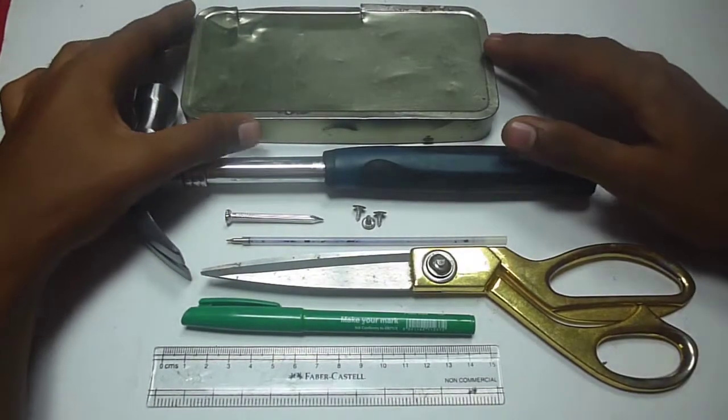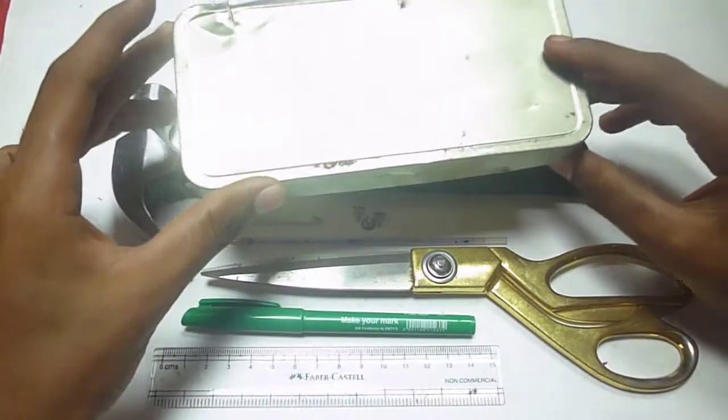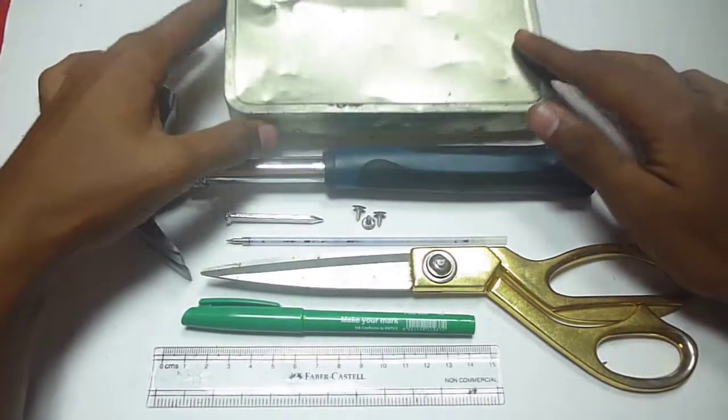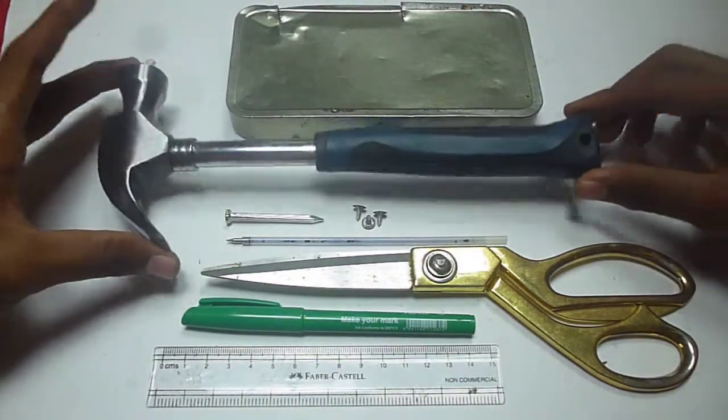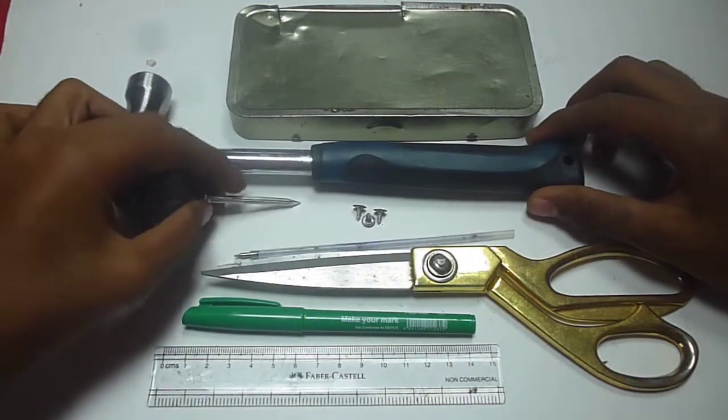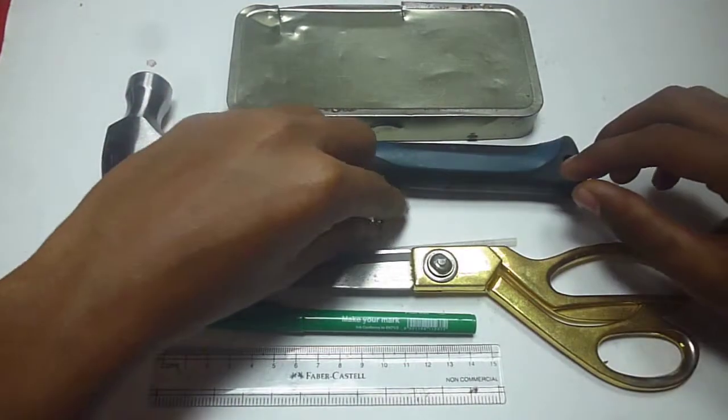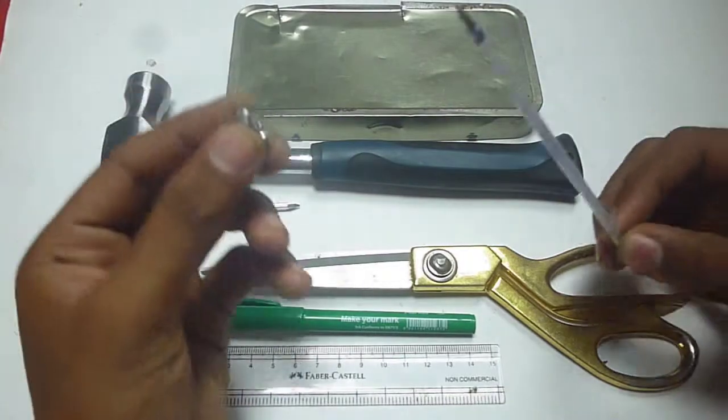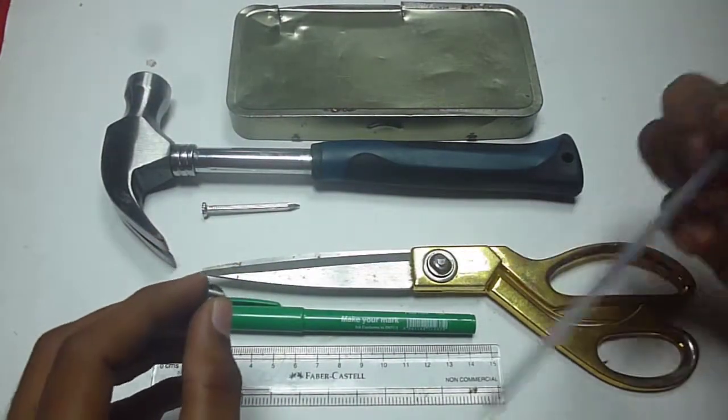So to make a propeller we're gonna need a metal sheet. I'm using a geometry box here. Then a hammer and nail to punch a hole inside the propeller, then a small screw and a filler to attach the propeller.